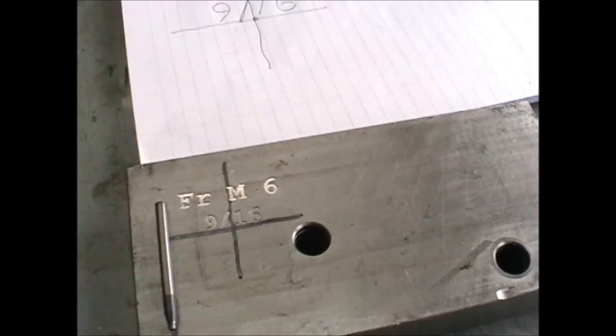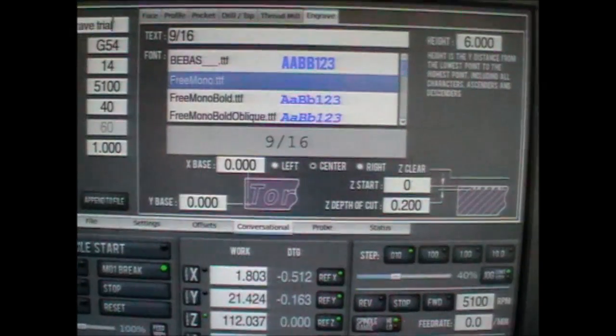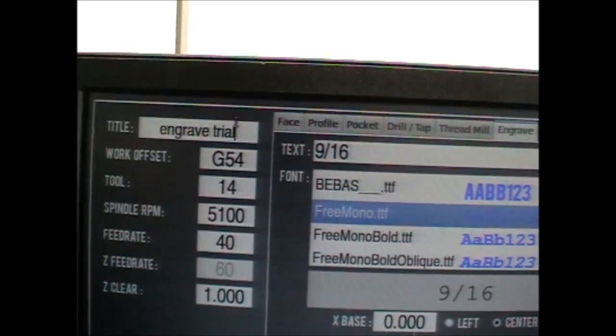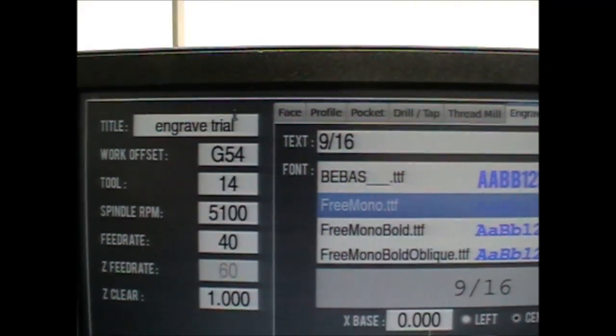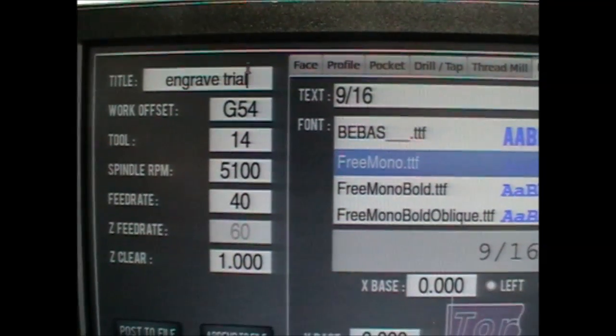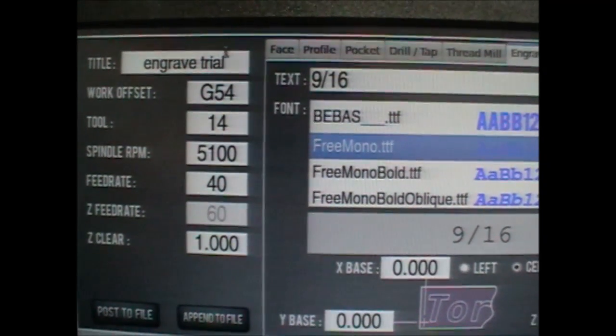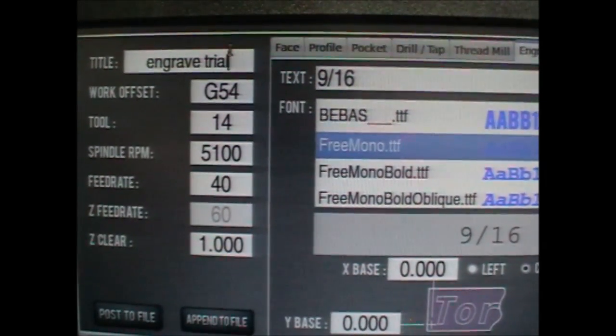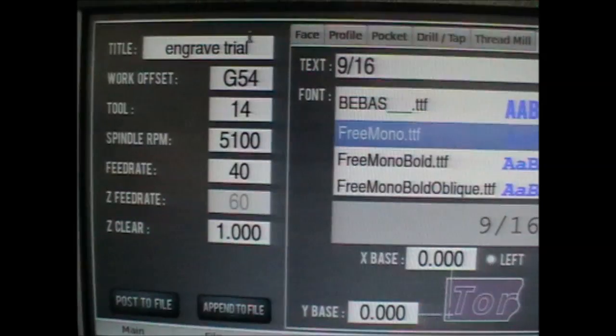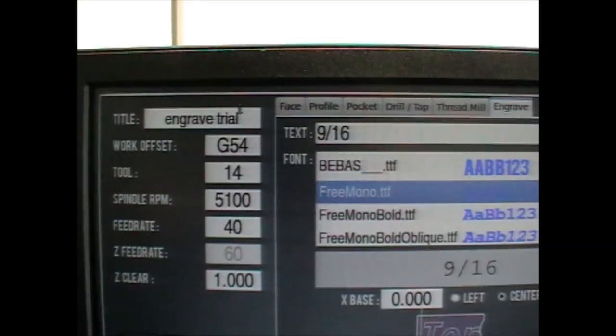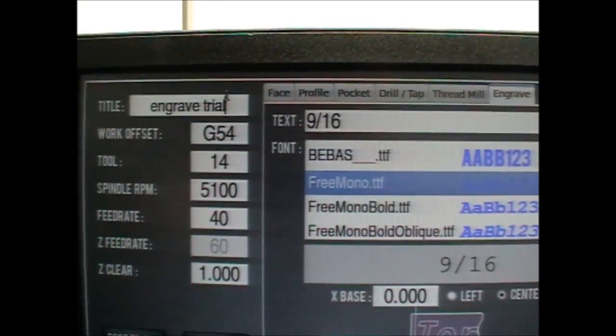Looking up at PathPilot, going through it quickly, we've got an engraved trial G54 calling it tool number 14, maximum RPM which is really a bit slow. We really ideally want to be running it in steel at least 10,000 RPM but that's as fast as it'll go. That's not a problem, there's nothing wrong with running a cutter like that too slow as long as the feed rate is set slow.